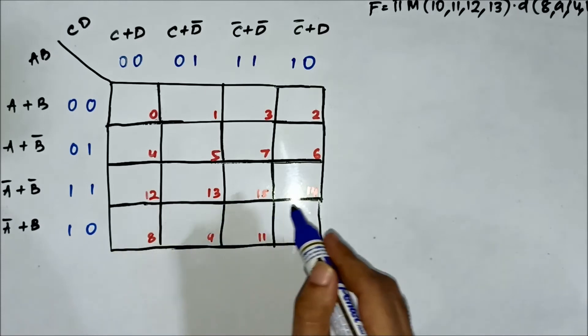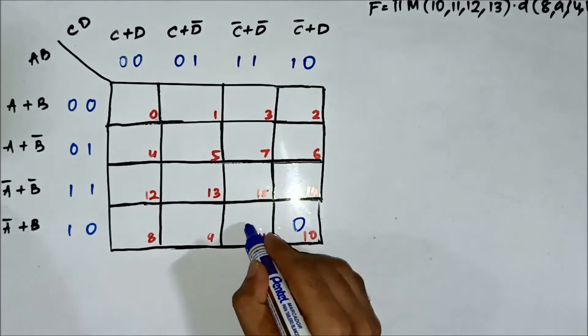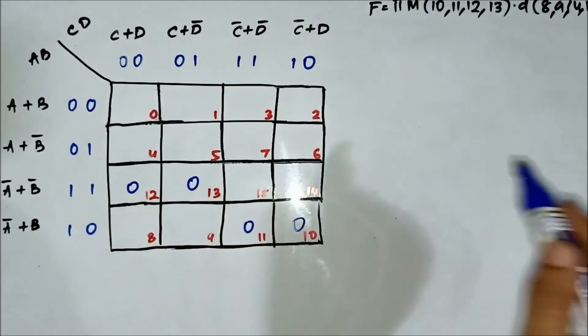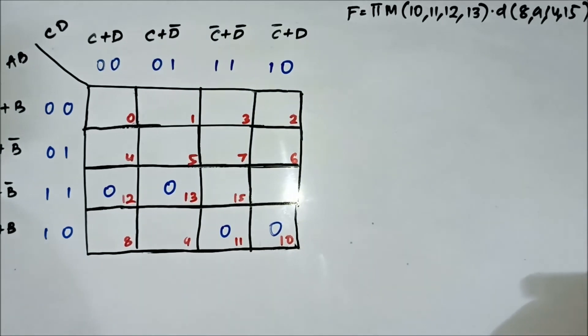10, 11, 12, 13 are the max term values. And the don't care values are 8, 9, 14, 15.